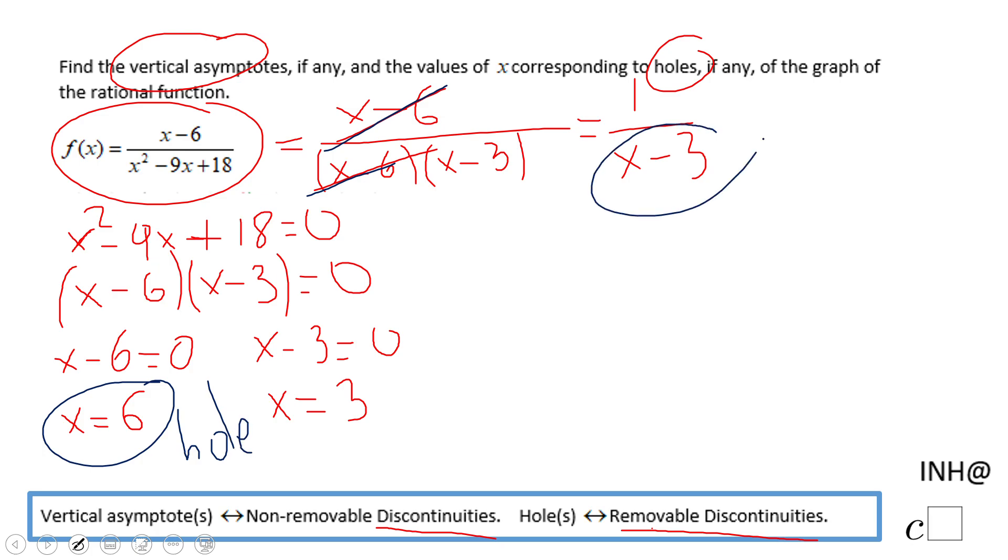On the other hand, this one is not removed, it's still there. So this is going to be a vertical asymptote.